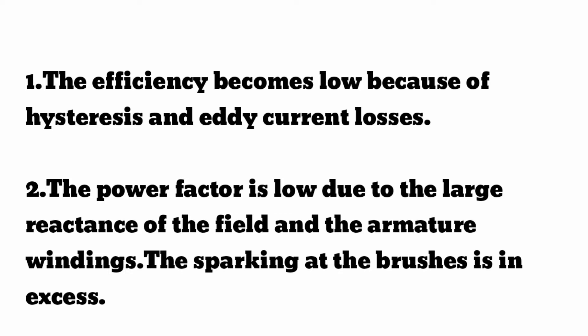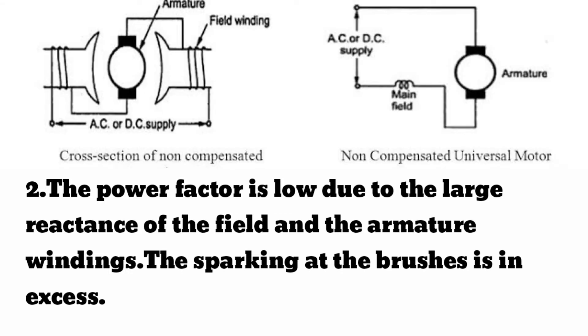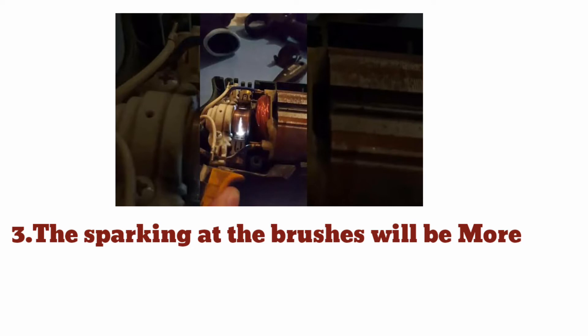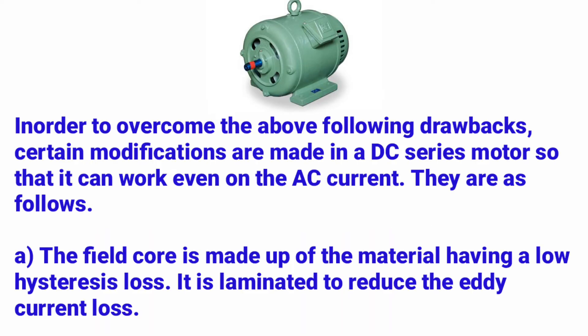Sparking at the brushes will increase when using the universal motor on AC supply. Because all three windings — main field winding, armature winding, and compensating winding — have large reactance, the power factor will be very poor. The sparking at the brushes is excessive due to this poor power factor. If DC supply is used instead, less sparking will appear at the brushes because reactance is low with DC.